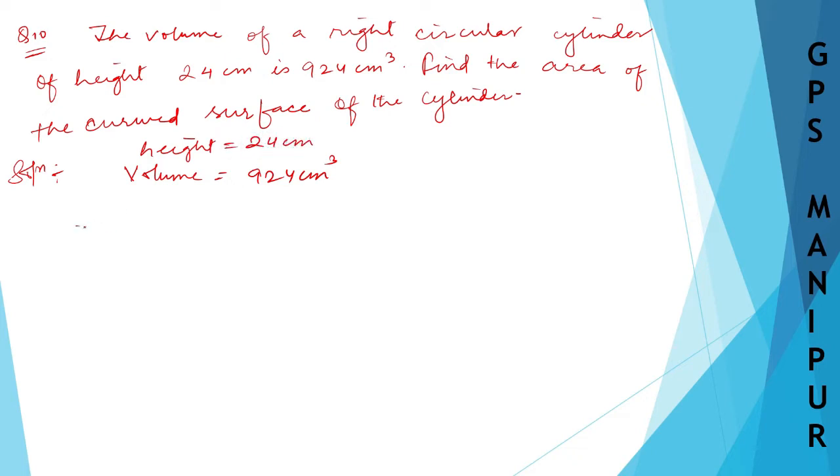The formula for volume of a cylinder is πr²h. This volume of a right circular cylinder equals 924. So instead of π, I'll use 22/7. We have (22/7) × r² × h, where h is 24, equals 924.